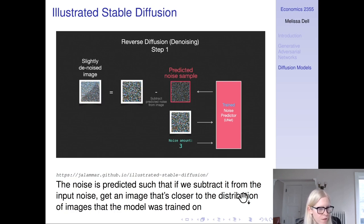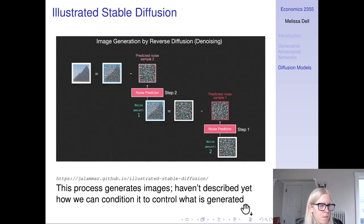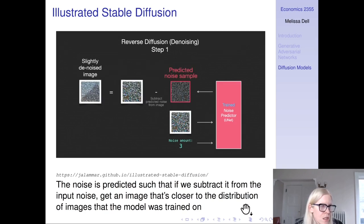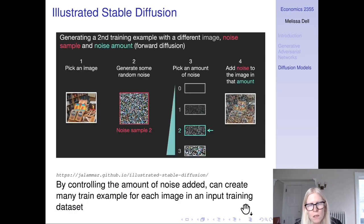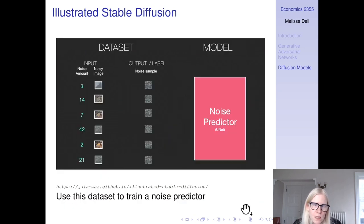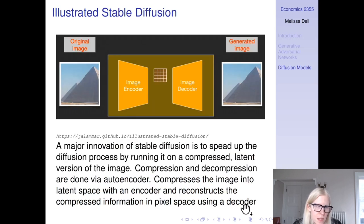The noise is predicted such that if we subtract it from the input noise, we get an image that's closer to the distribution of images the model was trained on, and this process generates images. So far, what I've described hasn't been conditional — we just start with a noise sample, subtract our predicted noise, and that gives us a denoised image. But in this description, we're not conditioning on text — this is just unconditional image generation.